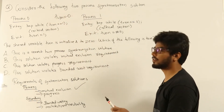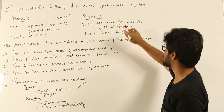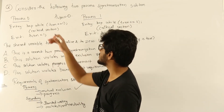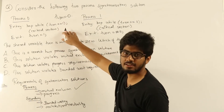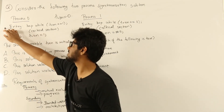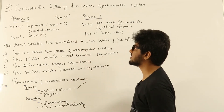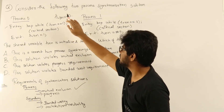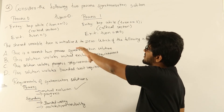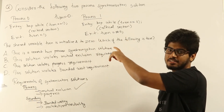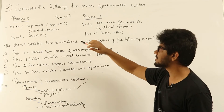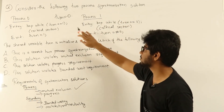When turn is 0, process 1 won't be able to enter the critical section — it is blocked. But process 0 will be able to enter the critical section. Now, let's say process 0 doesn't want to enter the critical section — it is executing something else and is not even reaching the entry point. But until turn becomes 1, process 1 won't be able to enter the critical section. So process 1 wants to enter, but it can't because turn is 0, and process 0 doesn't want to enter — it is doing something else.